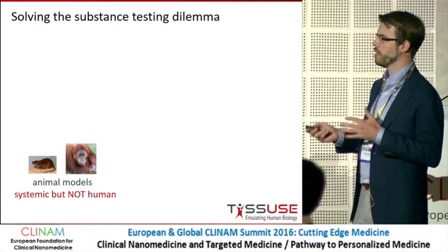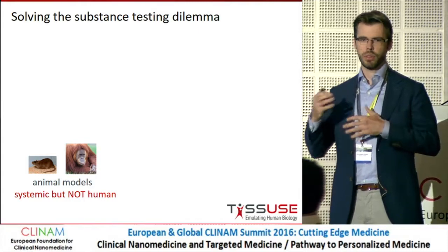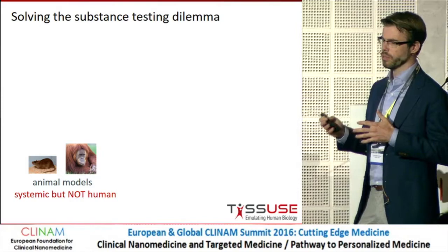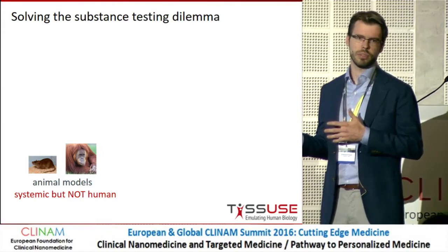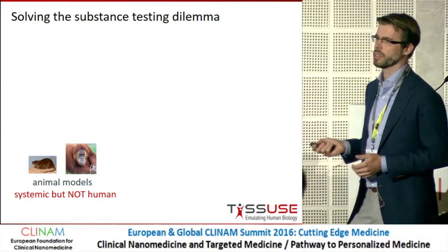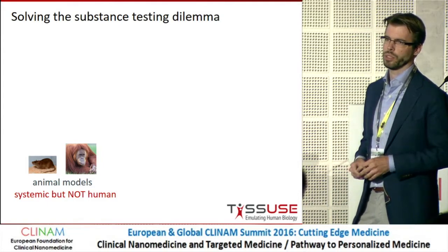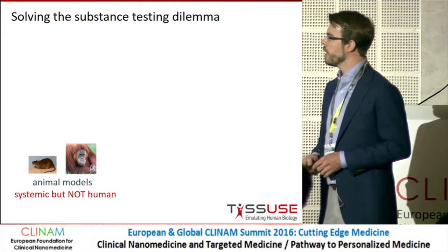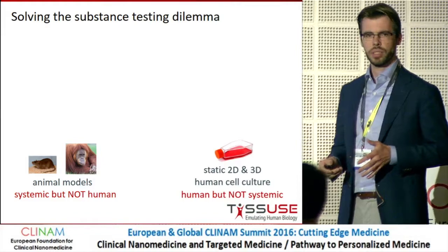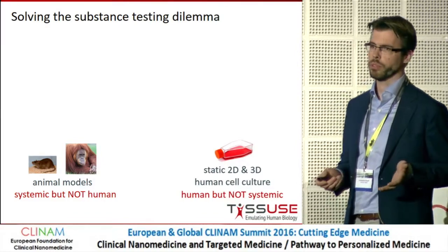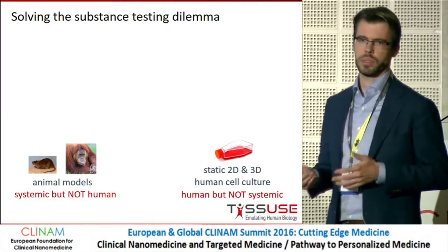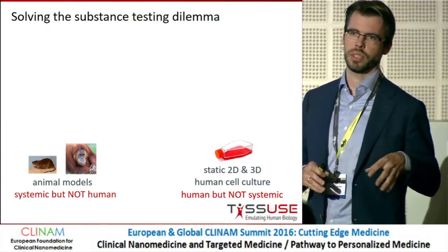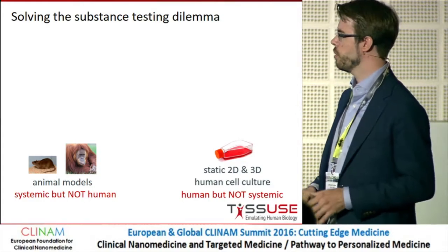On one hand, we have the animal models. These models are systemic — we have all the same organs as in the human body, connected by blood circulation, and we have organ crosstalk — but they are not human. This poses a severe problem and is one of the major causes of very high attrition rates in drug development of over 90%. On the other hand, we have human 2D and 3D cell culture models, which are human, maybe even primary derived, but they're not systemic — usually single cell types that are not interconnected, they don't communicate, and we have no crosstalk.